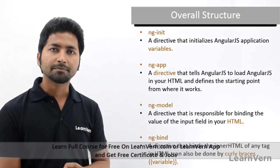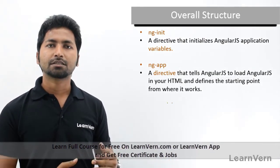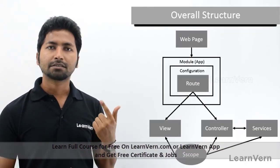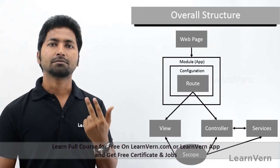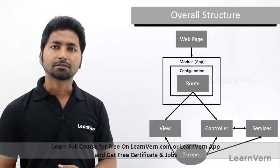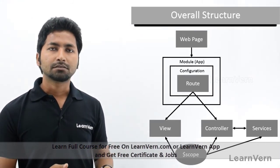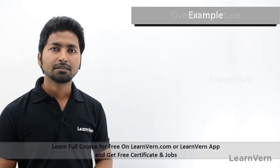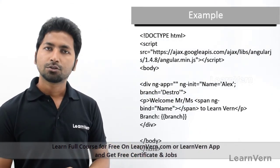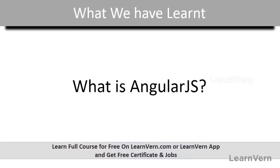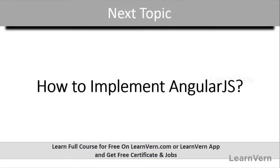ng-bind, or curly braces, is used to show a variable's value in your HTML view. When you run an AngularJS program, it first finds ng-app, then ng-model, then ng-bind, and runs accordingly. You can see a basic example here. In our next session we will look at a hands-on example of AngularJS.